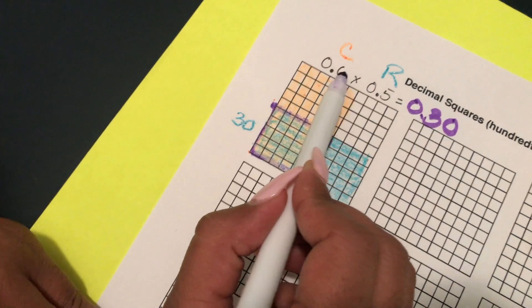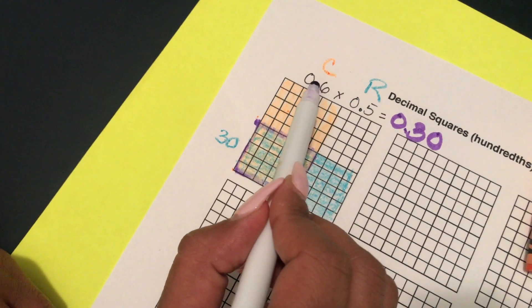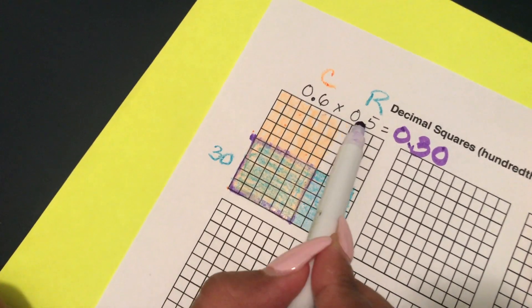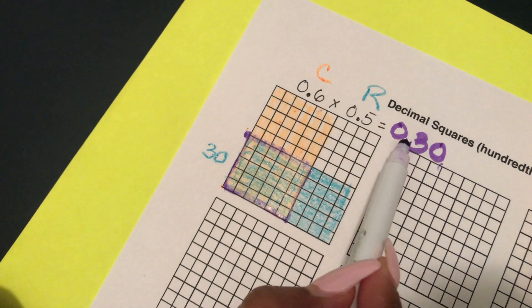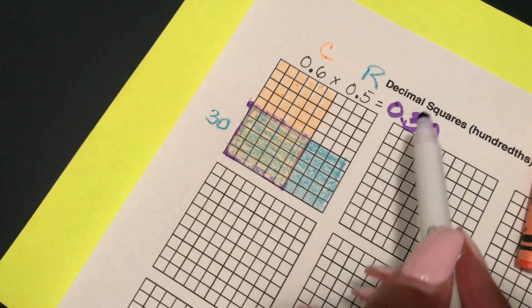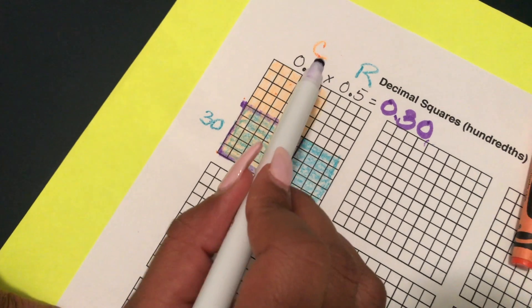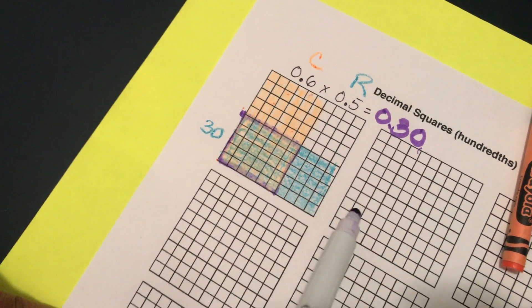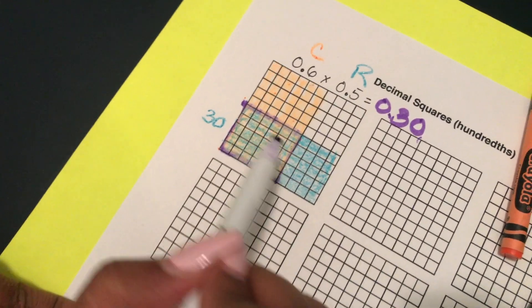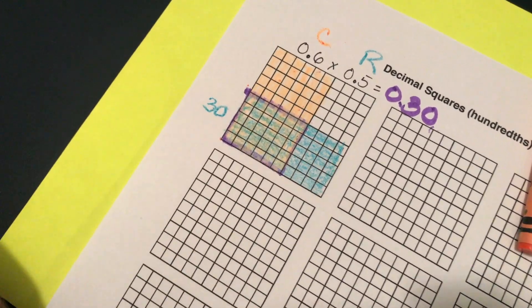So my answer is thirty hundredths. Another way is six times five is thirty and if I move this decimal over once and this decimal over once that would be one, two spaces moved over. So again all I did was shade in one for my column, one for my row, and then the part that they overlap is your answer.